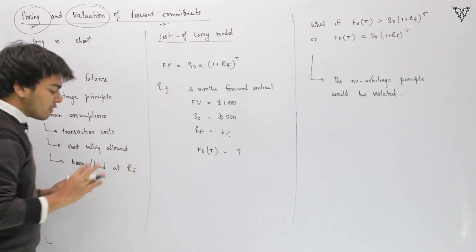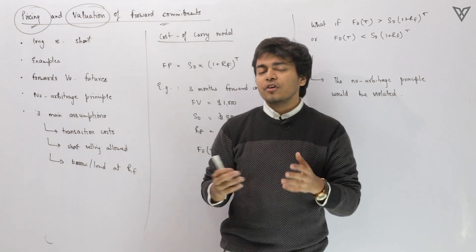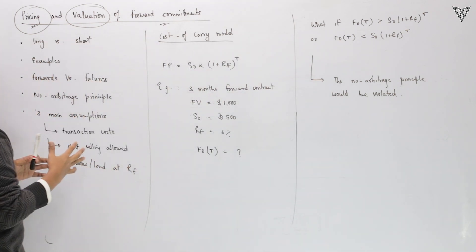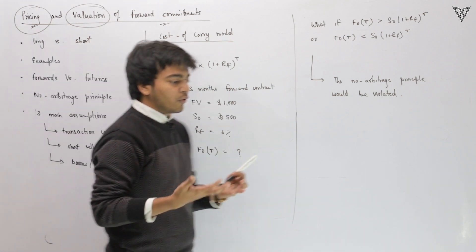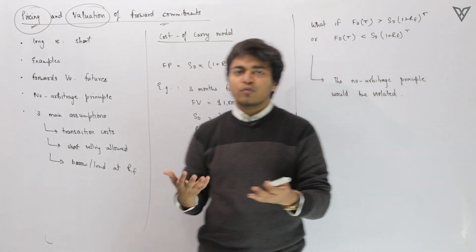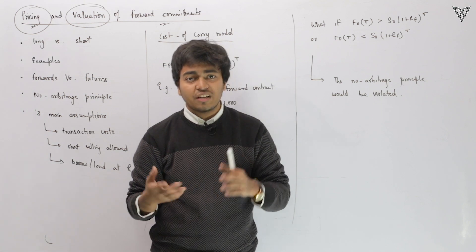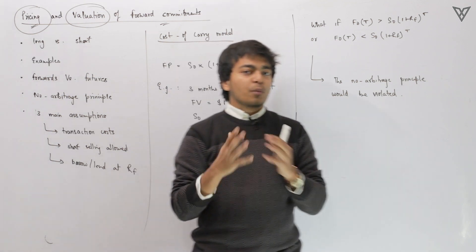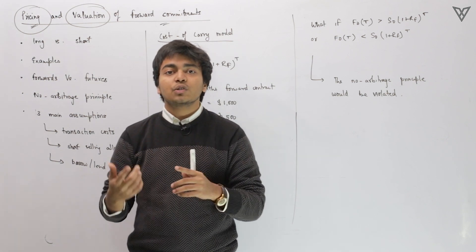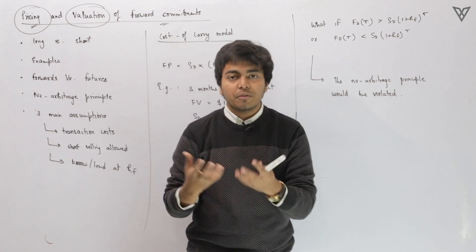I'll start with the basics first and cover a lot of things we have already done in level 1. The first thing I'm going to discuss is what are forward contracts, what are the positions we have in forward contracts, and how do you make value out of forward contracts. We all know there are two positions in a forward contract: a long position and a short position.